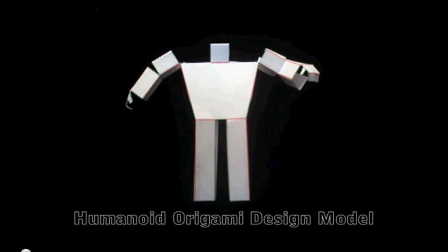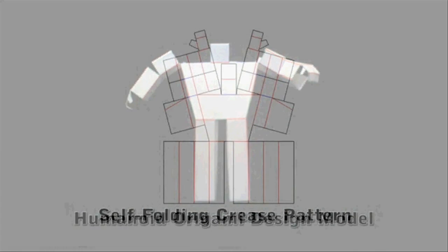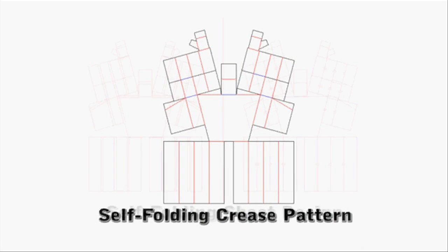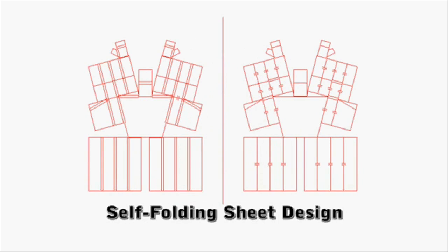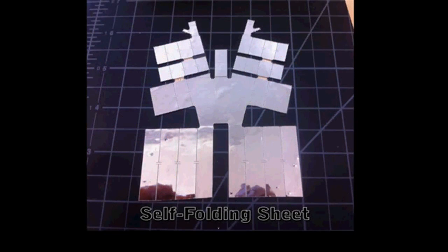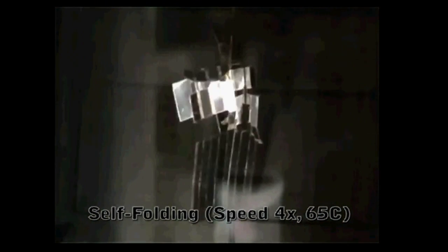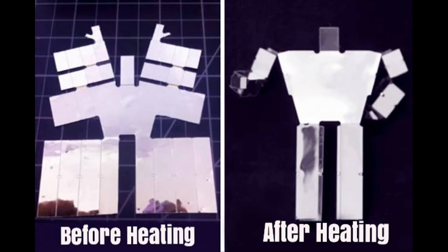To create a robot or any other 3D object, first we need to create the 2D designs for the self-folding sheets based on the 3D model of the required object. The new algorithm will help to do this step easily. Then those self-folding sheets can be created using 3D printers. After that, they will be heated to form the required 3D object.